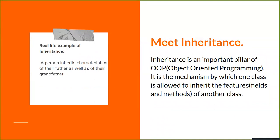The next concept is inheritance. Inheritance is an important pillar of object-oriented programming. It is the mechanism by which one class is allowed to inherit the features of another class. A real-life example: a person inherits characteristics from their father or grandfather. Inheritance supports the concept of reusability — when we want to create a new class and there is already a class that includes some code we want, we can simply derive our new class from the existing class.